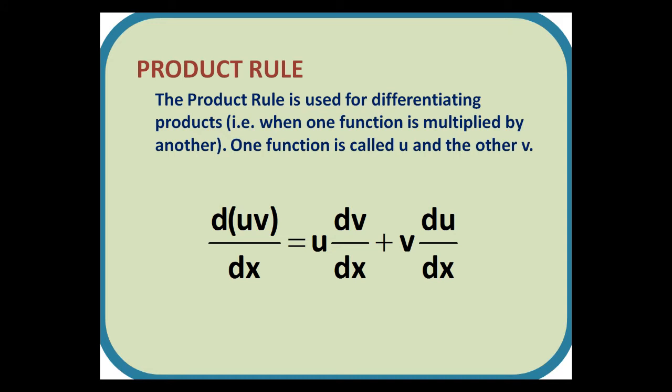Product rule. The product rule is used for differentiating products, i.e. when one function is multiplied by another. One function is called u and the other v. The formula is as shown, with the sum of u multiplied by the differential of v and v multiplied by the differential of u.